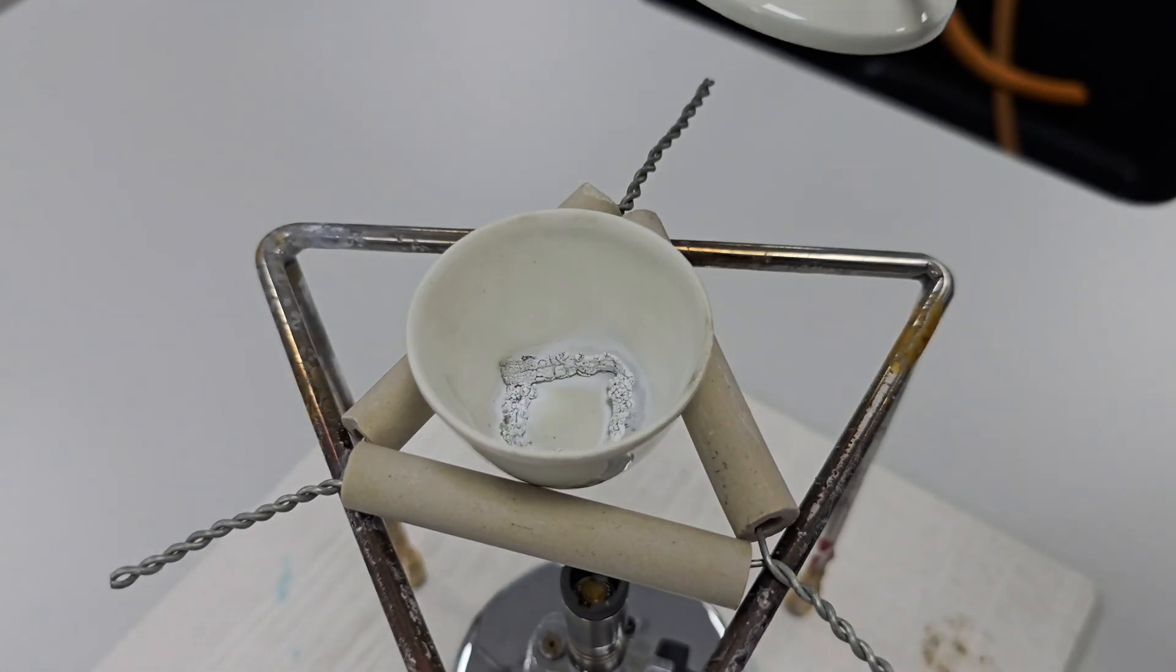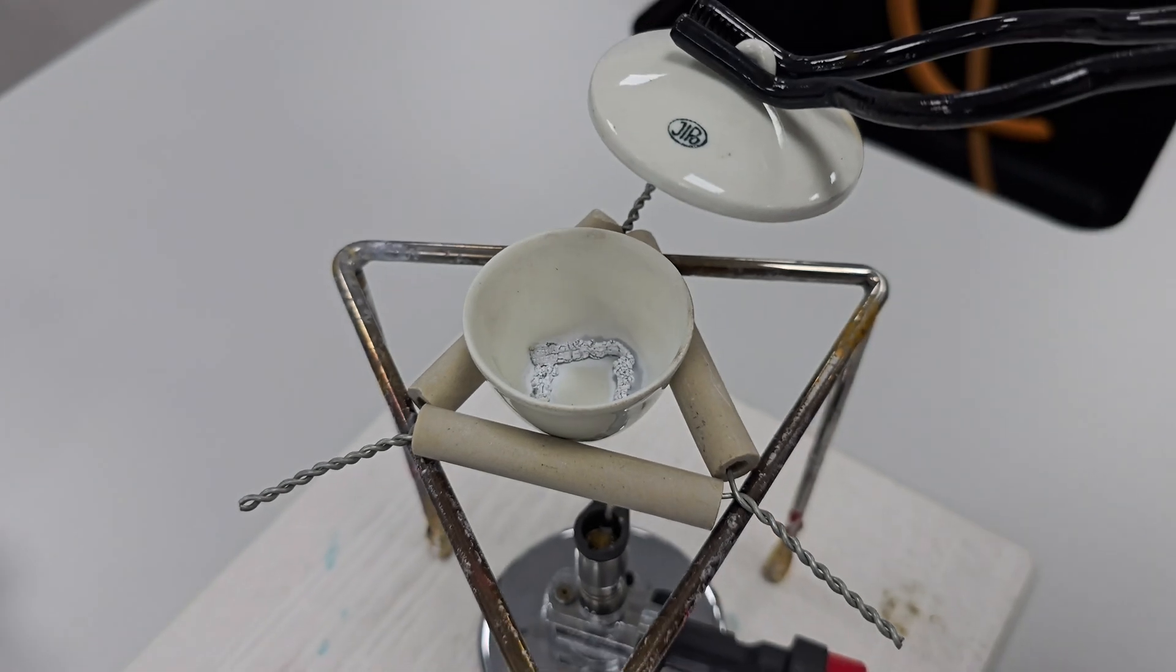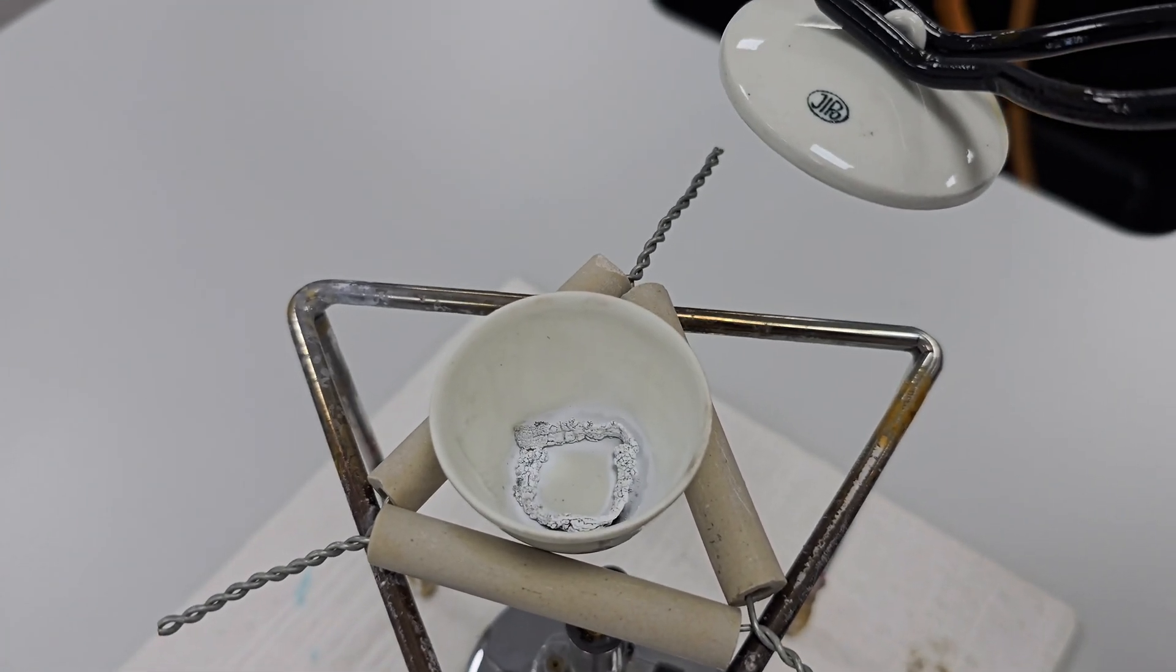Once the magnesium has completely turned into this white powder, magnesium oxide, we allow the crucible to cool down before taking the next measurement.